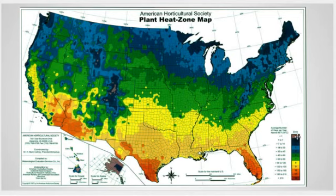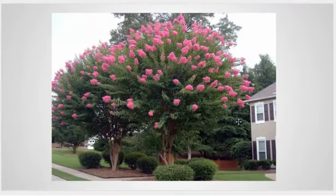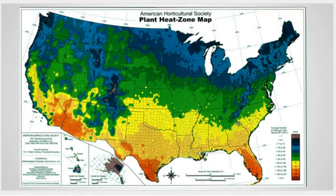Zone one on the heat zone map — there's less than one day above 86 degrees — you can find that up in the Colorado Rockies or the Wyoming Wind River Range, maybe parts of the Sierra Nevadas. Nothing like that around here, unfortunately. Let's look at zone eight — see that band of zone eight right there. There are 90 to 120 days of the year that it's above 86 degrees. That band is about the Piedmont of Georgia, right below Atlanta.